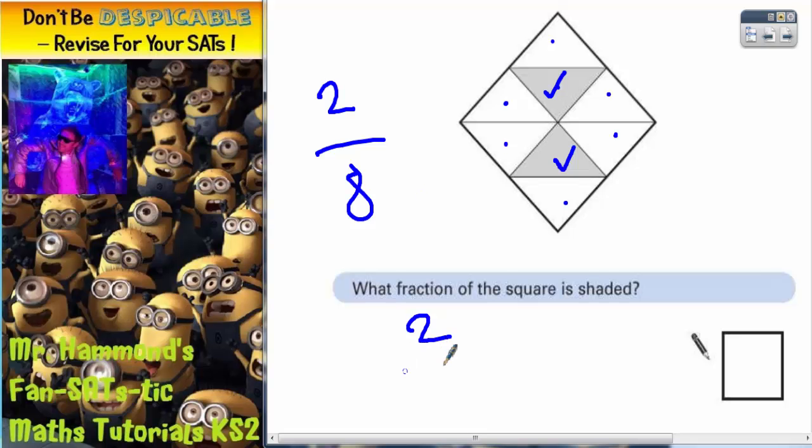Those of you who know about fractions will know that 2 out of 8 can be simplified to get an equivalent fraction. If you divide both the top and the bottom by 2,